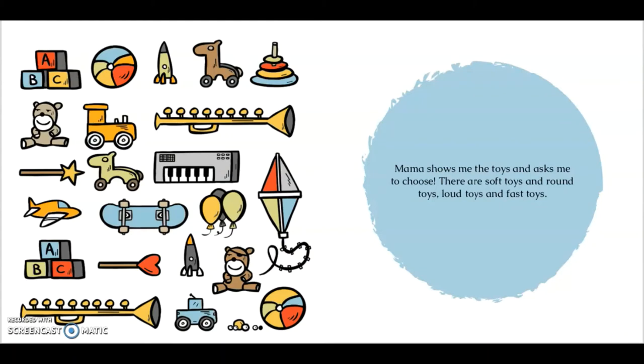Mama shows me the toys and asks me to choose. There are soft toys and round toys, loud toys and fast toys. Do you see all the toys that they are to choose from? So many things. Building blocks, beach balls, teddy bears and even a little plane. Which one would you want?